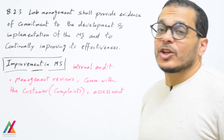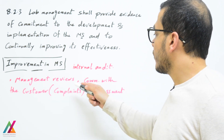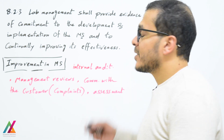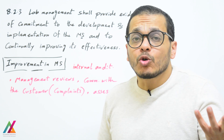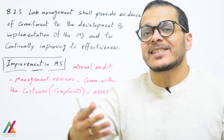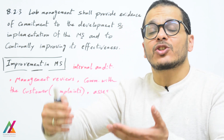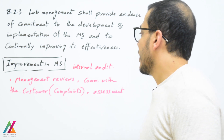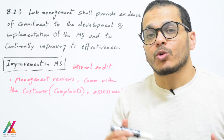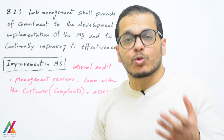Improvement in the lab management system will be driven by internal audits, management reviews, external audits and assessments, and communication with customers regarding complaints. During internal audits, the quality team identifies non-conforming work and determines appropriate corrective actions to prevent recurrence. Based on identified risks, corrective actions are taken to eliminate or reduce those risks. Customer complaints can also be discussed during the management review.